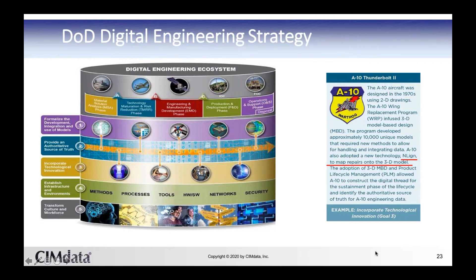The goals, as you see down the left side, include: developing, integrating, and using models — one of the things we're trying to move toward is more model-based acquisitions, instead of having to go through the costs of developing and testing prototypes, trying to do this in a model-based setting. The second goal is authoritative source of truth — the Air Force, like many large organizations, has many IT systems, many of which are linked and pulling data from other systems, so you have a lot of data going back and forth, and things can get changed as they're represented in one system versus another. There's always that issue of having one source that everything can pull from to get the most accurate data for decision-making.